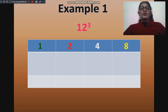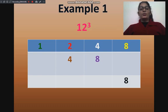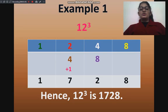In the next step, we will multiply both the middle terms with 2. So, twice of 2 is 4 and twice of 4 is 8. Now we will add all them up. First, we will add 8, then 8 plus 4 is 12 — 2 will be written and 1 will be carried out. Then 1 plus 4 plus 2 is 7, and then 1. Hence, 12 cube is 1728.